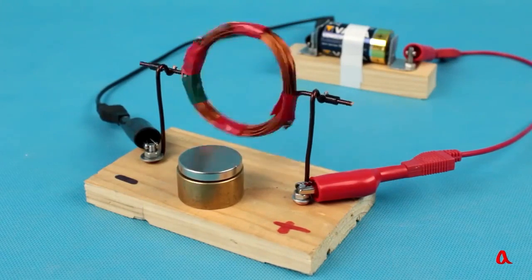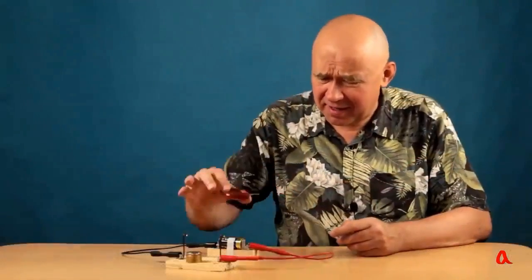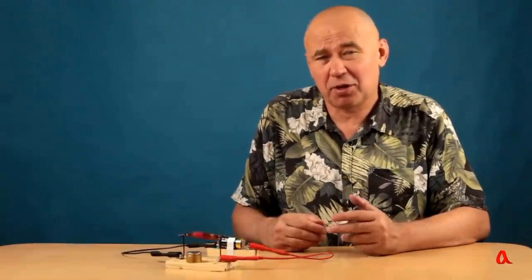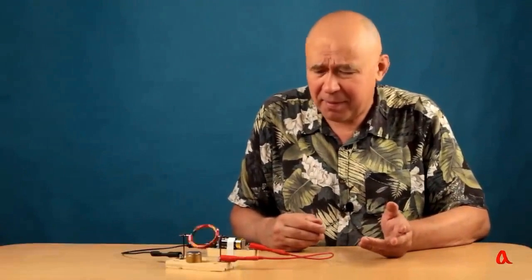And the ampere force pushes the coil only in one direction. Of course, such a collector is not very efficient. It would be better if it switched the direction of the current in the coil every half turn, rather than turning it off. However, the engine is still running.